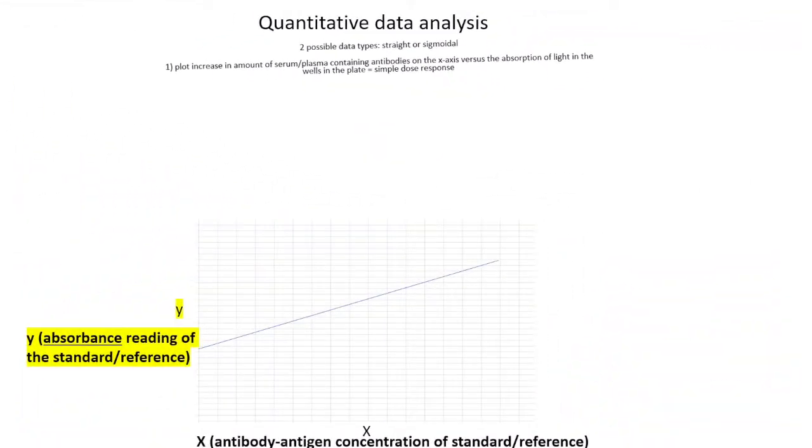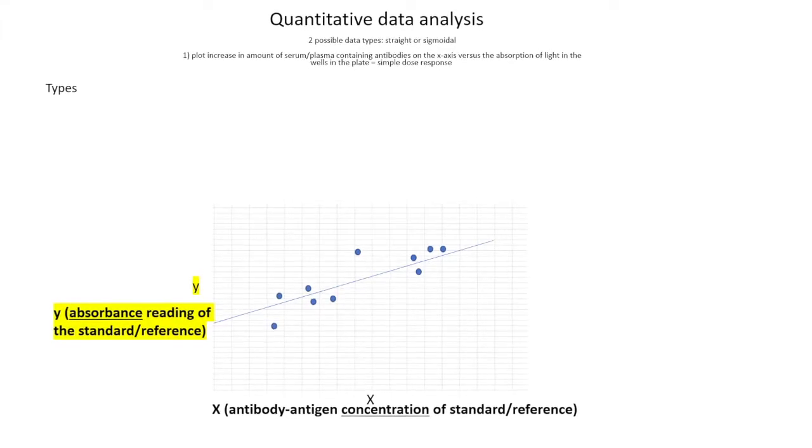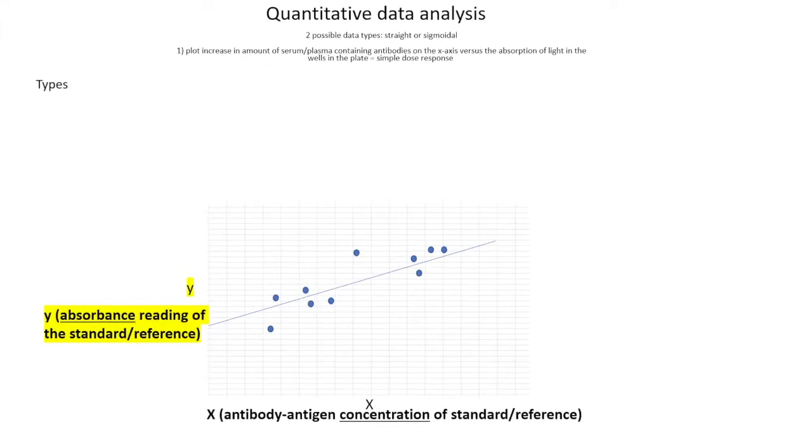More commonly, you may want to actually know how much of the antigen you have between samples or between individuals. This is because sometimes the amount of something you have actually determines whether the person is sick or what the outcome is going to be. Typically researchers, in your experiments, you'd want to know how much and compare how much you have between samples.